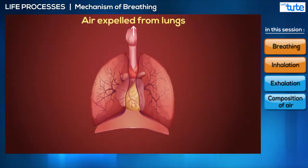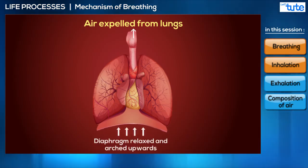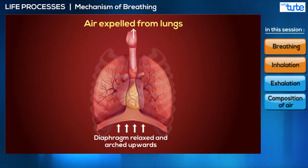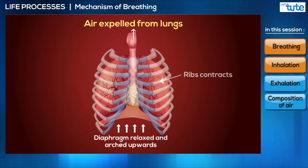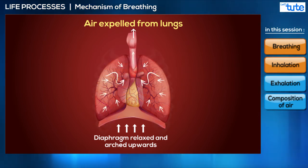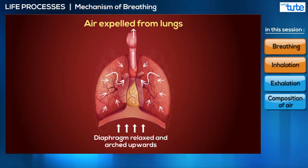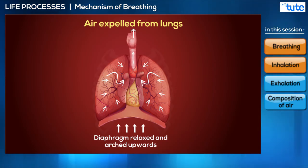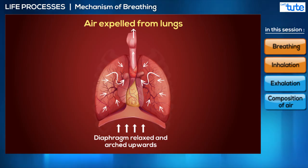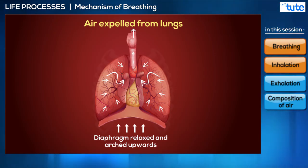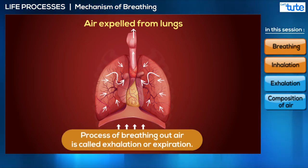The reverse situation occurs when we breathe out. The diaphragm relaxes and returns to its normal dome shape, and the ribs contract. As a result, the volume inside the lungs reduces, increasing the pressure inside. The pressure outside is now lower, so the air inside the lungs rushes outside to equalize the pressure — thus we breathe out.